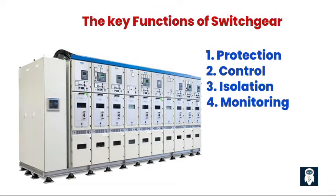The key functions of switchgear: Switchgear performs several critical functions that are necessary for efficient electrical power management in industrial settings. First, Protection — switchgear safeguards electrical systems from various electrical faults such as short circuits, overloads, and voltage fluctuations. It acts as a vital safety measure to prevent damage to equipment, electrical fires, and hazardous situations. Second, Control — switchgear allows operators to control the flow of electrical power, providing a means to start, stop, and regulate electrical equipment in an industrial facility, ensuring smooth and reliable operations while optimizing power usage.